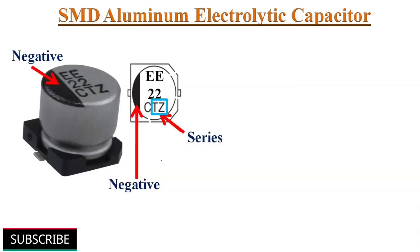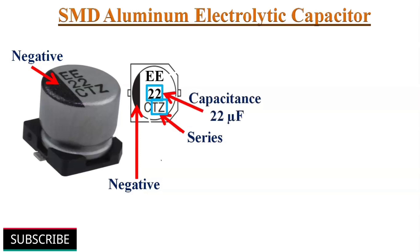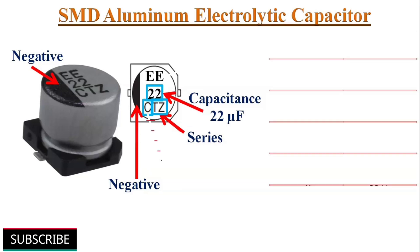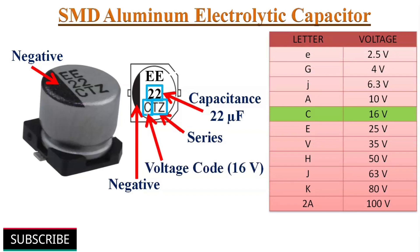SMD aluminum electrolytic capacitors are polarized, with the negative contact marked on the case. The series type is indicated with two letter characters, and the two-digit number indicates capacitance in microfarads — here it is 22µF. Voltage rating is indicated with a letter; for example, C means 16V, giving a capacitance value of 22µF 16V. An additional lot number is also printed on the case.